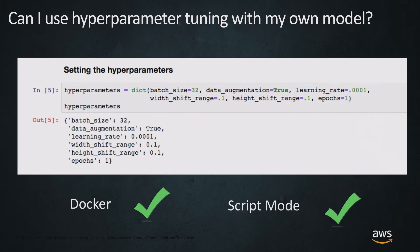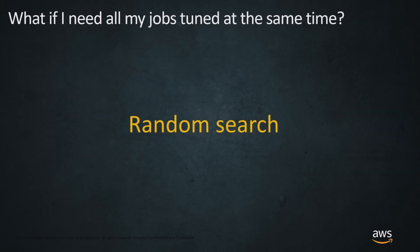We're going to walk through how to set that up. What you need is just a single dictionary — one JSON object called your hyperparameters. In this case we're looking at batch size, data augmentation, and learning rate. We're picking those hyperparameters and thinking about what the ranges and initial settings are going to be.